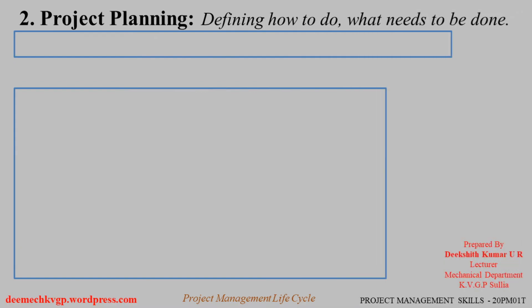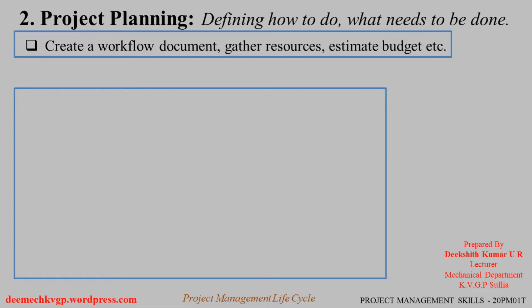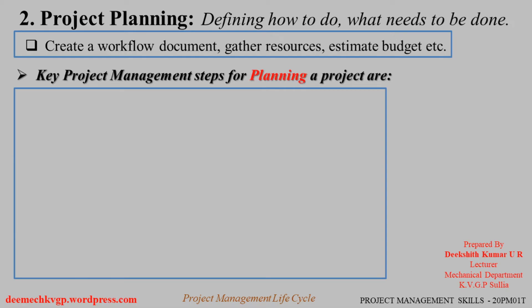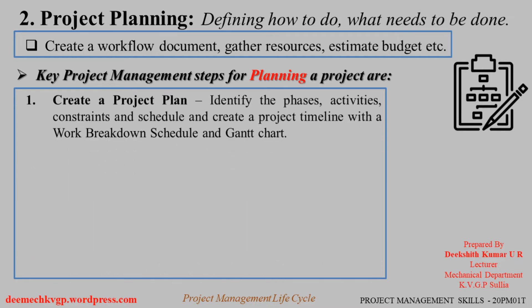The second phase is Project Planning, which defines how to do and what needs to be done — creating a workflow document, gathering resources, estimating budget, etc. Key project management steps for planning are: Create a project plan — identify the phases, activities, constraints, and schedule, and create a project timeline with a work breakdown structure and Gantt chart. Here the larger perspective of the project is broken down into small units, which we call the work breakdown structure. The required activities in each subsection are identified, and time for each activity is measured. All these details are represented in a bar graph or Gantt chart for easy understanding.